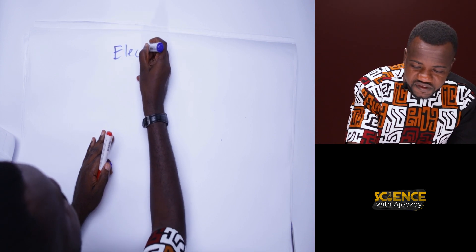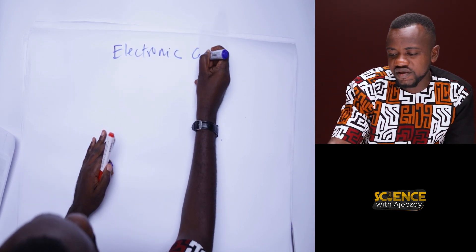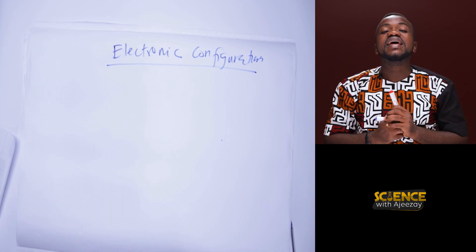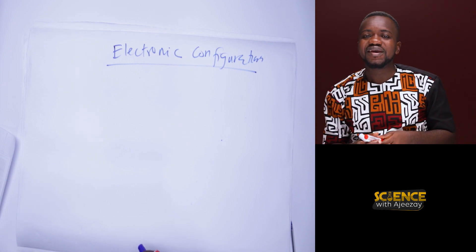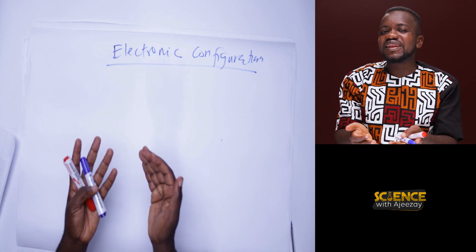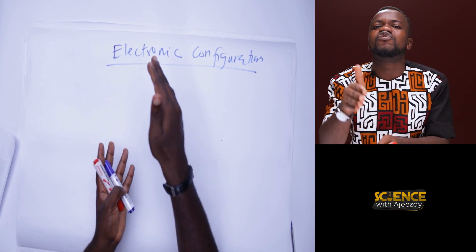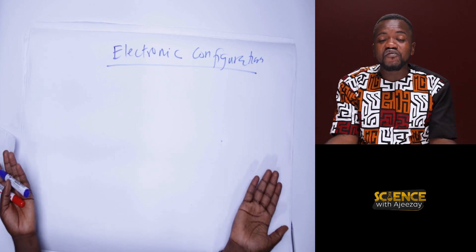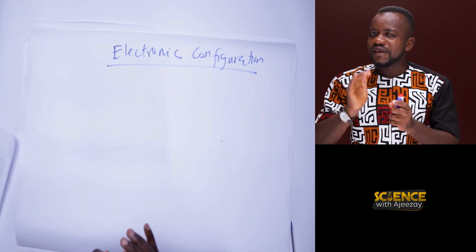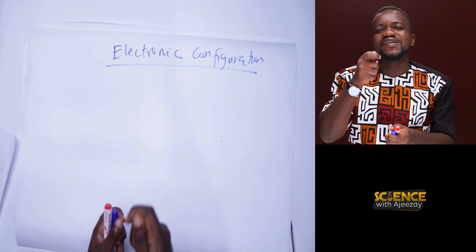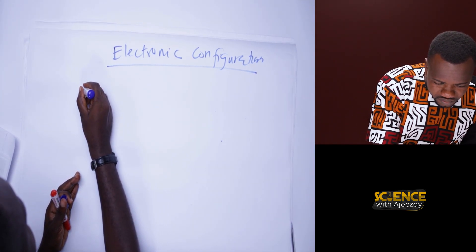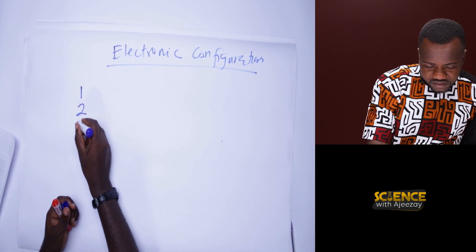Welcome to a very interesting session on electronic configuration. We have heard about electrons and protons. Electrons are always in the shells, and there are rules for which shell an electron should belong to. Electronic configuration is simply the arrangement of electrons into the shells of an atom. We have different kinds of shells: the first shell, second shell, third shell, fourth shell, and so forth.